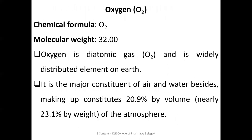The first important compound is Oxygen. Its chemical formula is O2 and molecular weight is 32 (two oxygen atoms, each 16). Oxygen is a diatomic gas, widely distributed on earth, and the major constituent of air and water, constituting 20.9% by volume of the atmosphere.